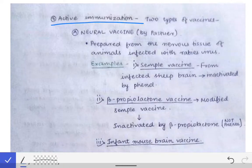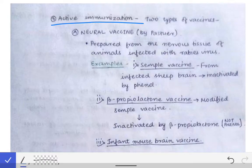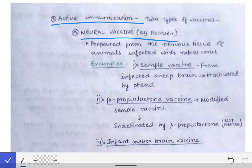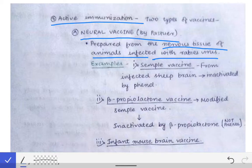Active immunization means the body is led to produce immunity on its own against the virus. For active immunization there are two types of vaccines. The first is the neural vaccine, which is a very old vaccine. These neural vaccines were developed by Pasteur and were prepared from the nervous tissue of infected animals — specifically from the brain of animals infected with the rabies virus.